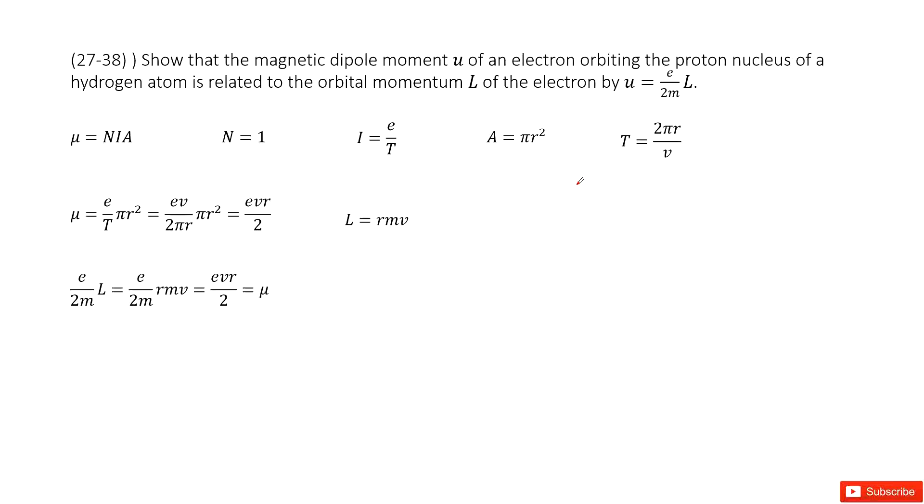So there we need to prove the magnetic dipole moment μ just equal to this function. This L is our orbital momentum L. So how can we prove it? We go from the left to the right.